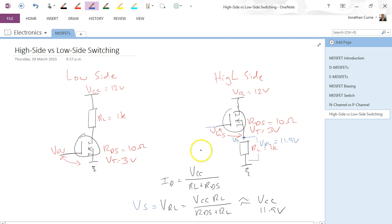Let's have a look at what we need to be able to turn this device on. We know that VGS must be greater than the threshold voltage. So, Vg minus Vs must be greater than Vt. Or, Vg minus 11.9 volts must be greater than 3 volts. If we rearrange that, we find that Vg must be greater than 14.9 volts in order to switch on this particular FET.